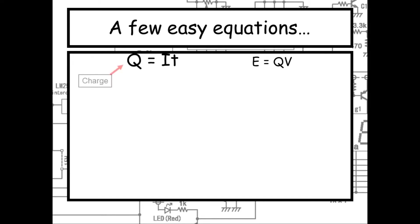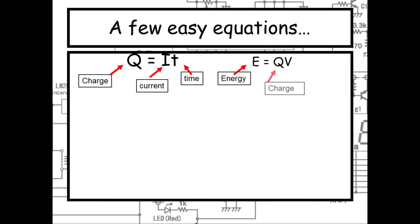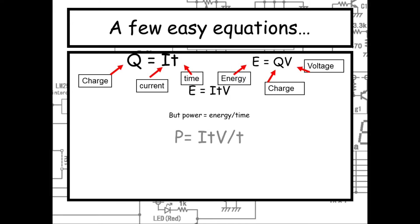Q is for charge, I is current, and T is for time. Then we've got energy E, Q is for charge, and again V is voltage. So if we combine these two equations, we get E equals ITV, simply by substituting Q into E equals QV — IT gets substituted in.